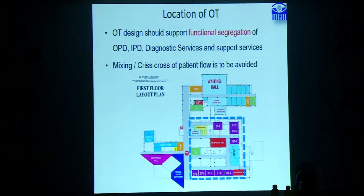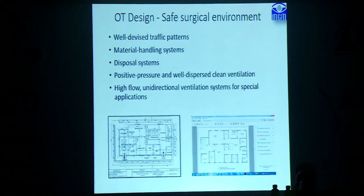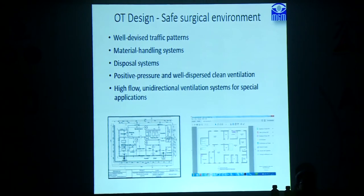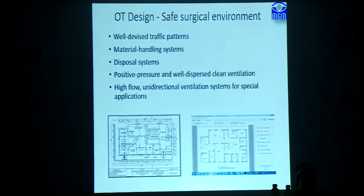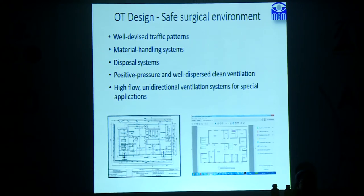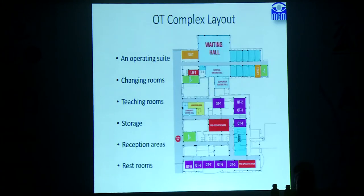The location of the OT is very important. It should support functional segregation of OPD, IPD, diagnostic services, and support services. Since we have different types of services in ophthalmology care, they should be segregated and crisscross patient flow should be avoided. The OT design should ensure a safe surgical environment with well-divided traffic patterns, material handling systems, disposal systems, positive pressure, well-dispersed clean ventilation, and high-flow unidirectional ventilation systems for special applications. Architects can design and present the required OT type, which can then be customized.